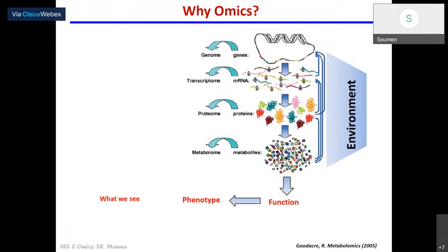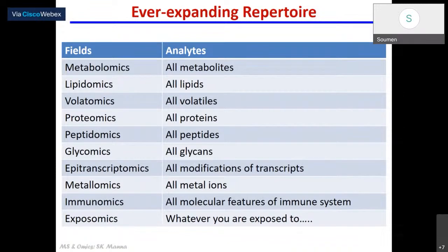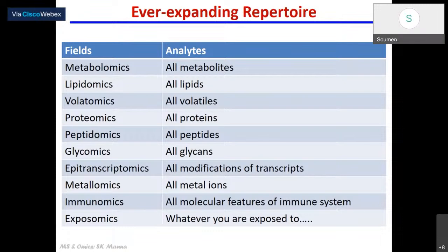Now let us try to see what are different types of omics where mass spec has really significantly helped us. One is metabolomics, which is basically the study of all the metabolites. When we are getting metabolites — lipids, volatiles, etc. — we primarily indicate that they should be endogenous in origin. As long as they are inside and part of the biochemical landscape, then only we should consider that a part of the omics we are interested in. Anything which is external, which we are exposed to, is a part of exposomics, which we will come to later on. So: metabolomics, then lipidomics, volatomics — the study of all volatiles.